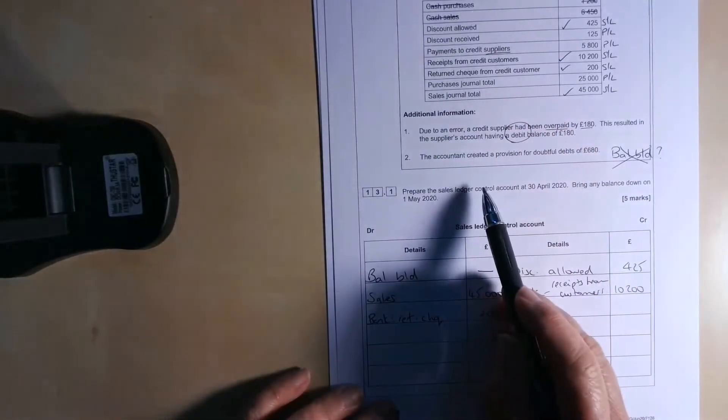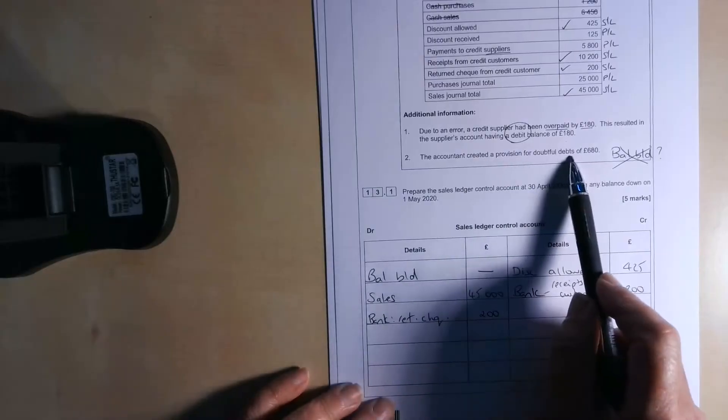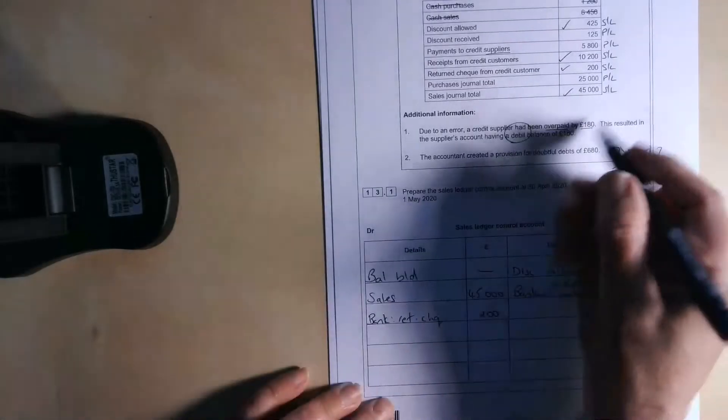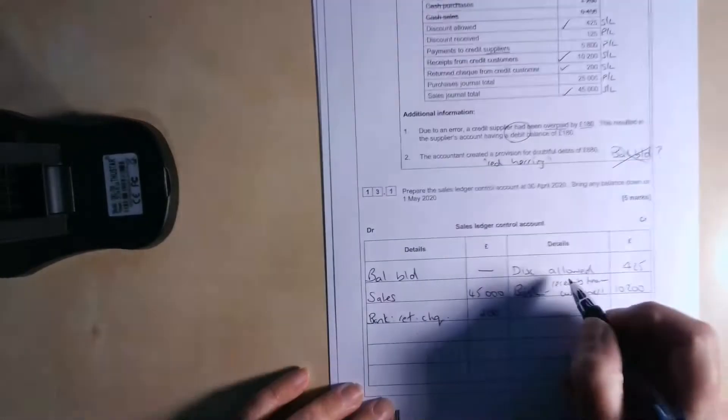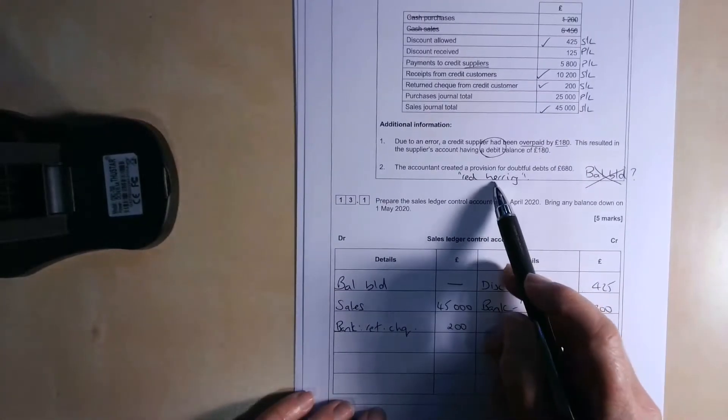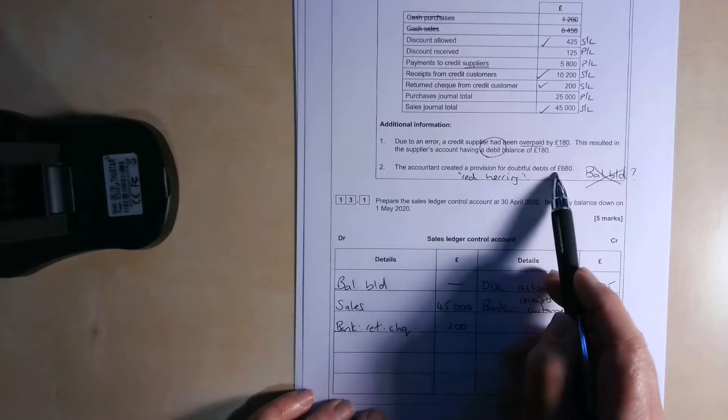Okay. Now, there are no contra entries, I don't think, are there? No contra entries. There is some information here about a provision for doubtful debts. Now, this is what we call a red herring. So a red herring is something that's put in there to try and trip you up or fool you. Don't be fooled, don't be tripped up. Red herrings, we don't want to include anything to do with the provision for doubtful debts.